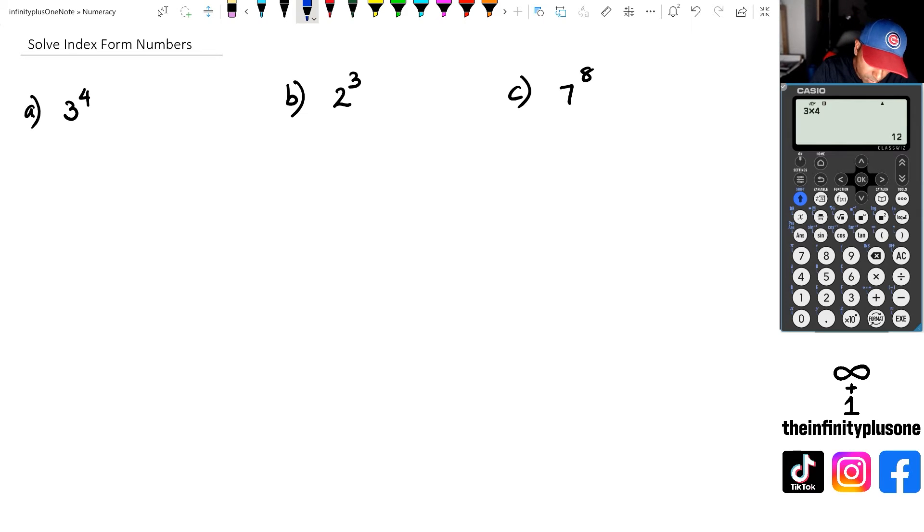So what that means is you're actually taking the number 3 and you're multiplying it by itself 4 times. So that means your answer here is going to be 3 times 3 times 3 times another 3 and that's going to give you 81. Now if you've been keeping up with my video series, you know that you can actually do this in a much shorter way with this calculator. So all we need to do is we just go 3 to the power of, which is this button here. Click on 3 to the power of 4 and we've got 81.